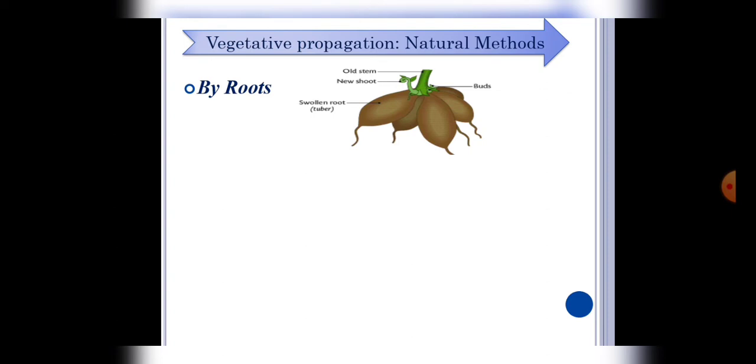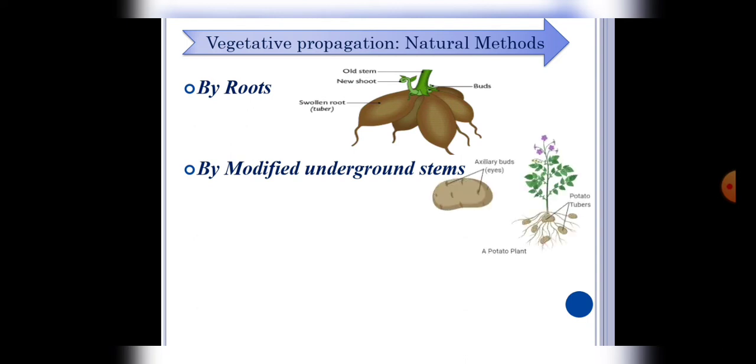Next, by modified underground stems. As we have discussed in the previous slide that some stem conduct some body parts through which new plant grow. For example, potato has an eye-like structure through which new modified stem grow. In the same way, ginger can be another example which grows as rhizome.